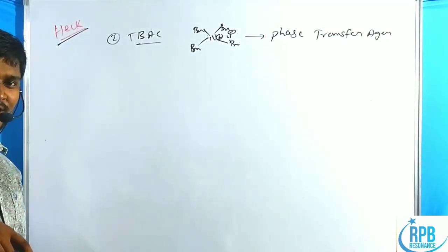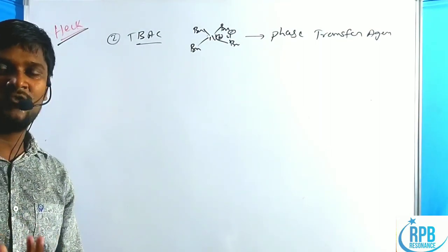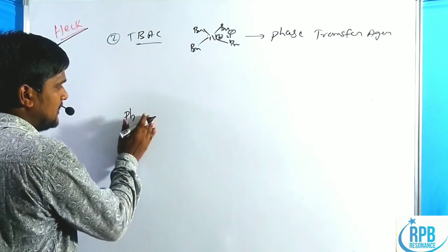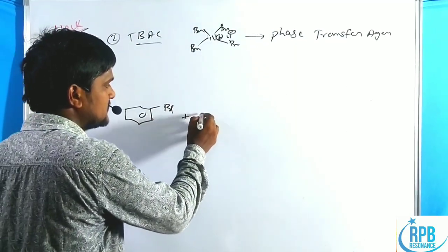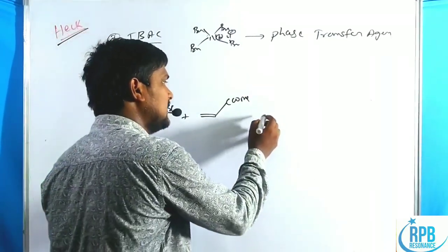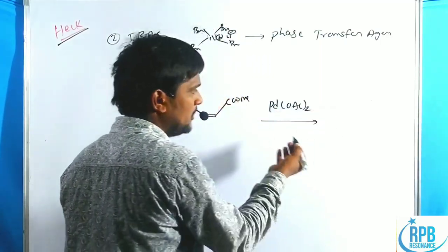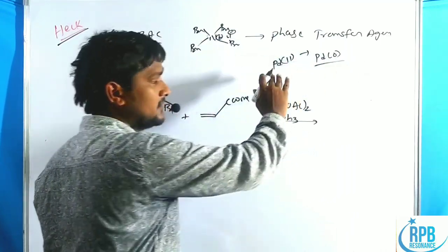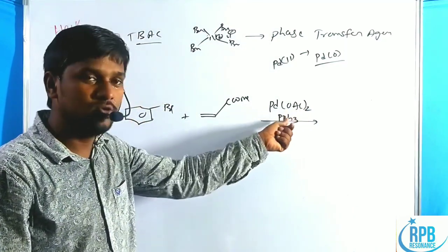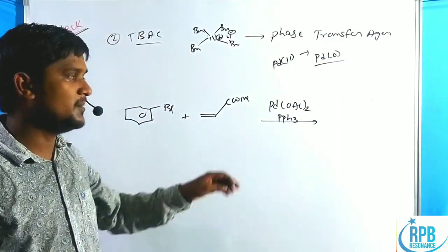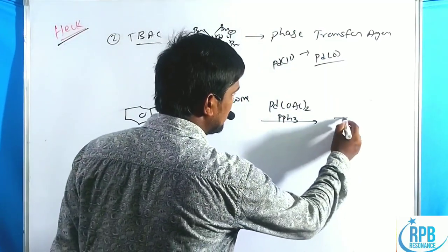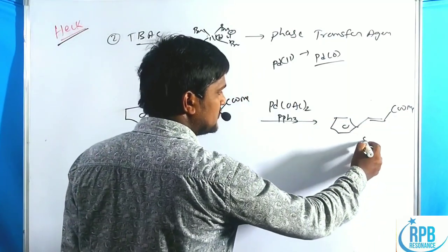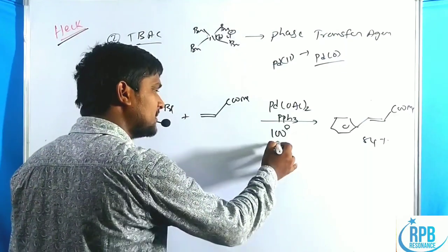The main drawback of the Heck cross-coupling reaction is that it normally requires temperatures of 100°C or higher. For example, phenyl bromide reacted with methyl acrylate using palladium(OAc)₂ and PPh₃ (which generates Pd(0) in situ — since Pd²⁺ is unstable compared to Pd(0)) gives the trans product in about 84% yield at 100°C.